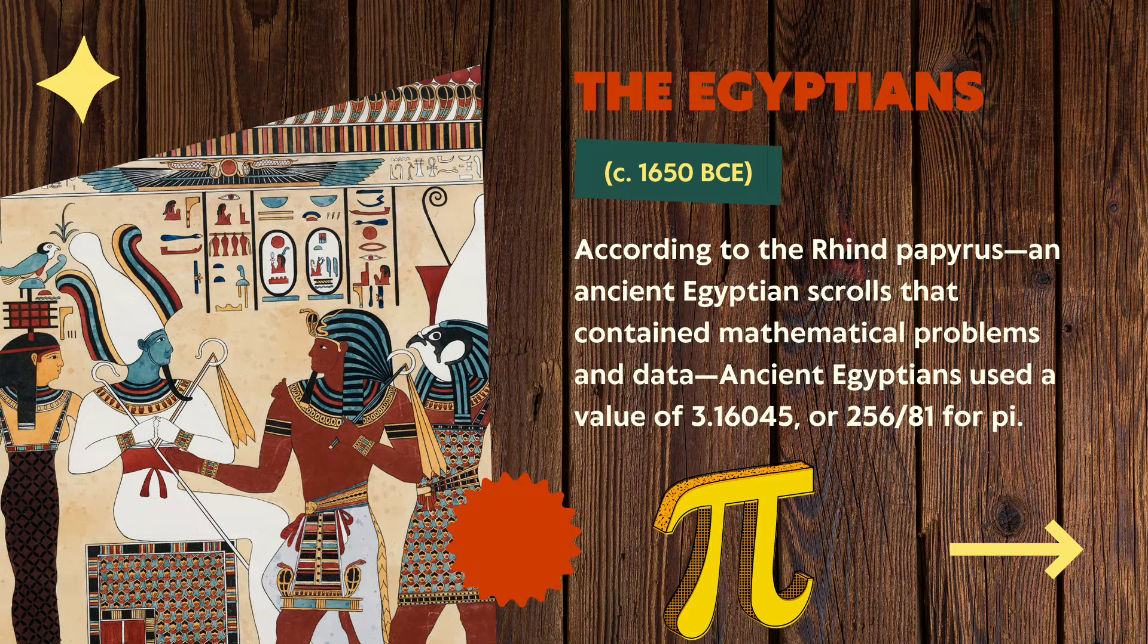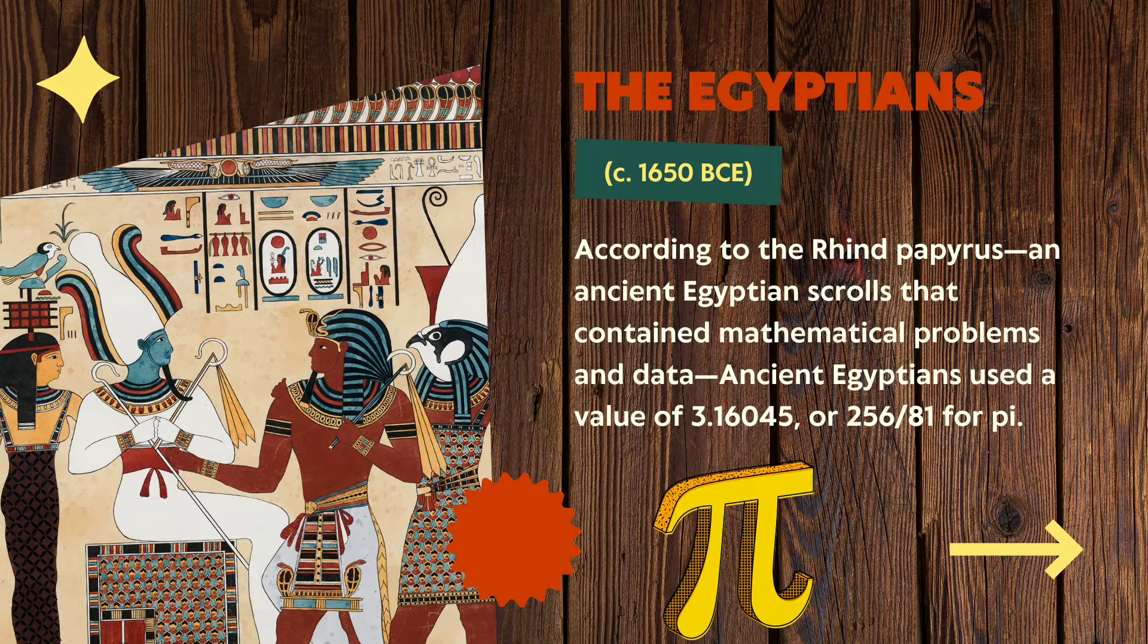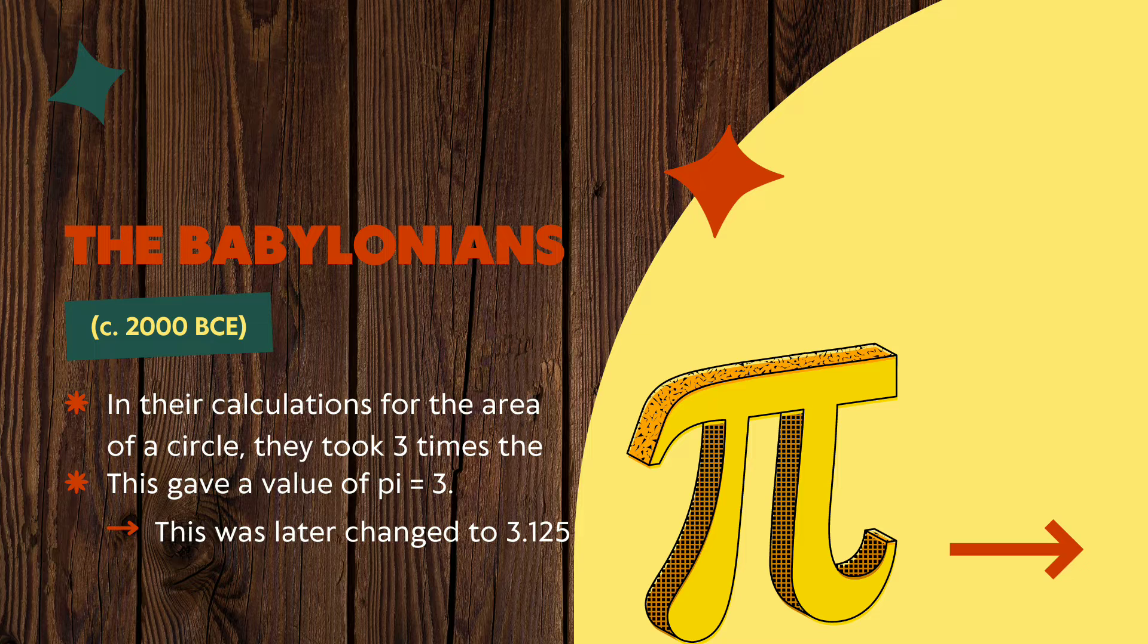The Egyptians used a value for pi 3.16045 or 256 by 81 for pi. After that, Babylonians used the value for pi 3, and this was later changed to 3.125.